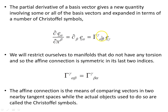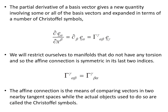When values are put in, we get the Christoffel symbols, and sometimes there will be one or more of these when we expand out the basis. We will restrict ourselves to manifolds that do not have any torsion, so the affine connection is symmetric in the last two indices — the alpha-beta can be swapped with beta-alpha. The affine connection is basically a means of comparing vectors in two different nearby tangent spaces, while the actual objects used to do so are called the Christoffel symbols. That's the difference between the two ideas.